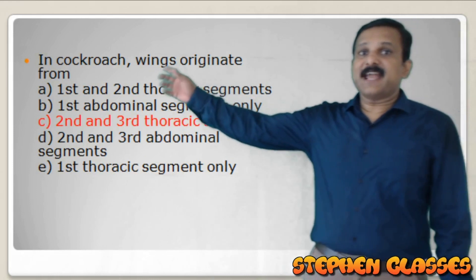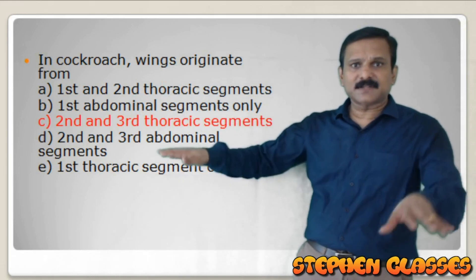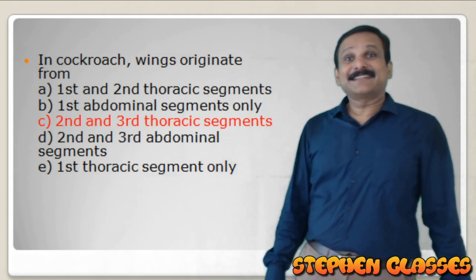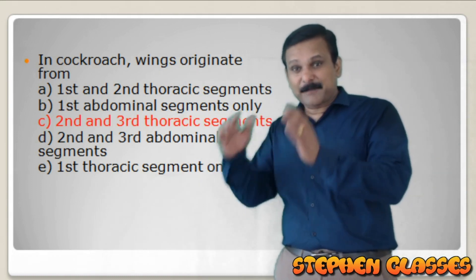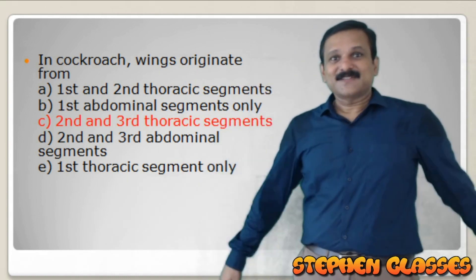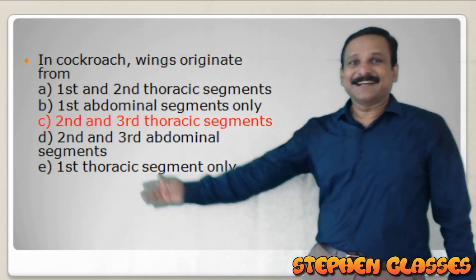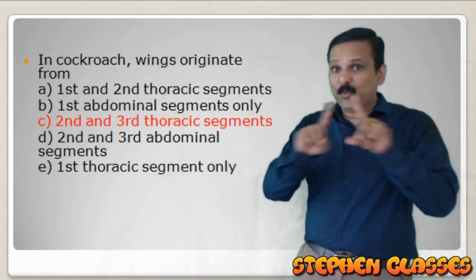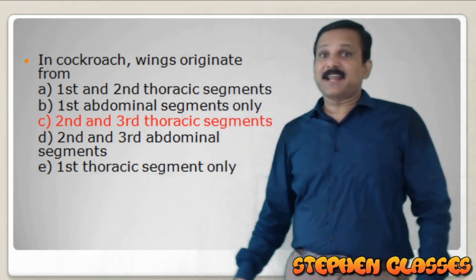Wings in cockroach originate from the second and third thoracic segments. Option A (first and second thoracic) is wrong; first abdominal segments - never, wings never arise from abdomen. The correct answer is option C: second and third thoracic segments. No wings arise from the first thoracic (prothorax) segment. Legs, however, arise from all three thoracic segments.